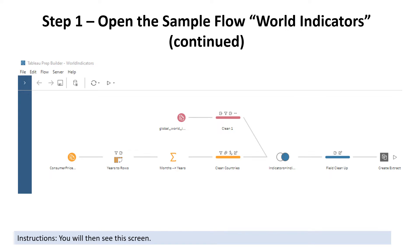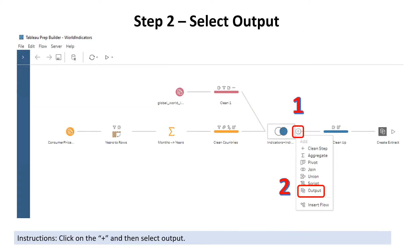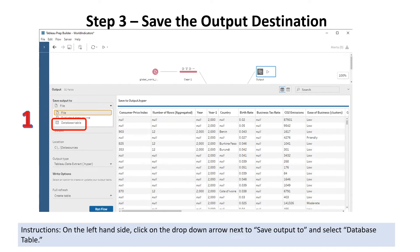When you do that, you'll see this screen. You can see the plus button on the screen — make sure you click on that and then select the option of output. On the left-hand side, you'll now see a drop-down menu which you can click on, next to the Save Output To field.